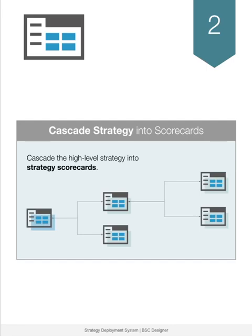Step 2: Cascade your high-level strategy into scorecards. What is a strategy on a practical level? It is a set of goals, metrics, action plans, along with dashboards and strategy maps. To manage these components, we'll use scorecards. Think about files on your computer — you don't put all files in a single folder. Likewise, in strategy deployment, we'll use many scorecards to reflect the complexity of the strategy.